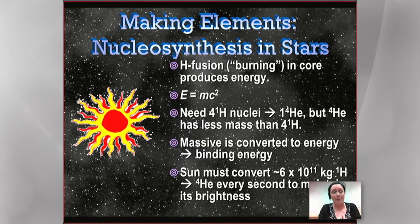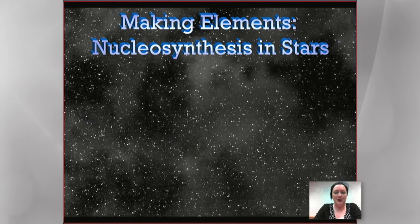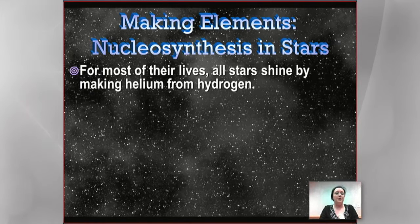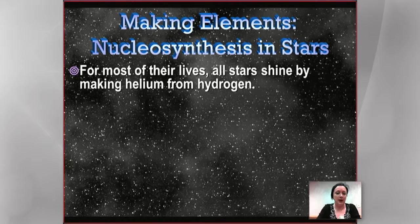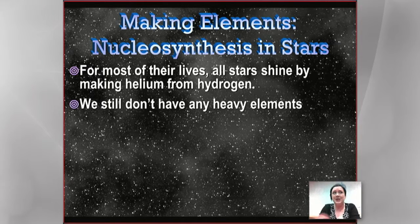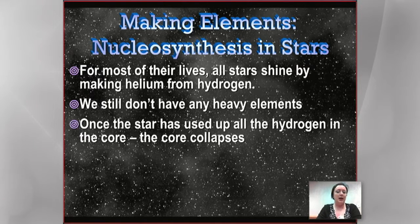Luckily, the sun has a lot more mass than that, so it's not going to run out anytime soon — eventually it will, but not in our lifetimes. For most of their lives, stars are like the sun, doing the same thing that happened in the early universe: taking protons and sticking them together, turning hydrogen into helium. So we still don't have any heavy elements — we've only made hydrogen and helium — so we have to think about what happens next.